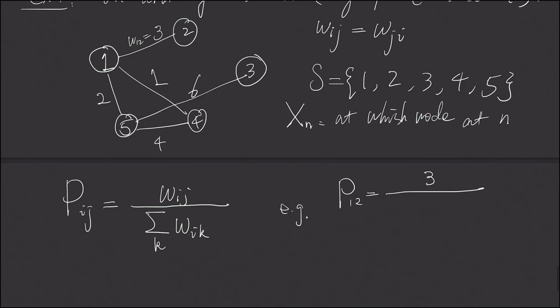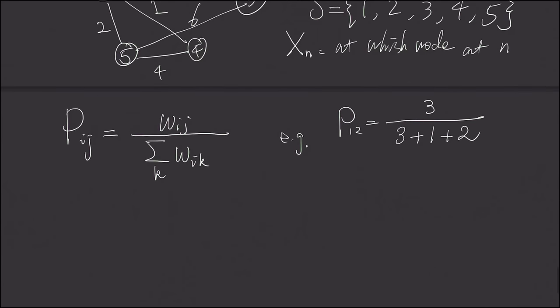So for example, if we look at this node right here, node number 1. It's connected with node number 5, node number 4, and node number 2. And then, what happens is P12 is nothing but, I think I copied down the number wrong. This should be 3. So P12, apparently, P12 is nothing but 3 divided by 3 plus 1 plus 2.